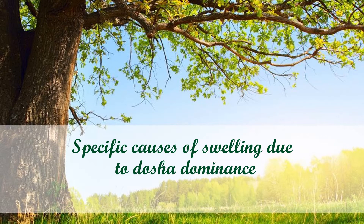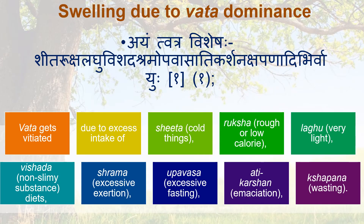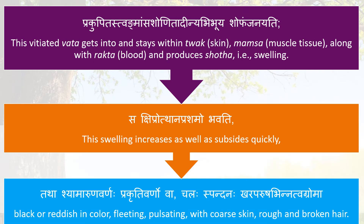Specific causes of swelling based on Dosha dominance. Swelling due to Vata dominance: Vata gets vitiated due to excess intake of Rooksha (rough/calorie-dry), Laghu (very light), Vishada (non-slimy) substance diets, Shrama (excessive exertion), Upavasa (excessive fasting), Adhikarshana (emaciation), and Shabana (wasting). This vitiated Vata gets into Tvak (skin), Mamsa (muscle tissue), Shonita (blood) and produces Shotha.